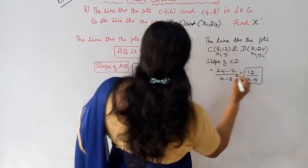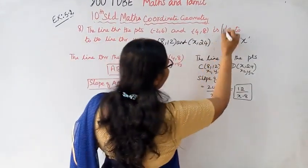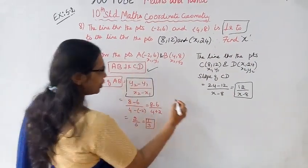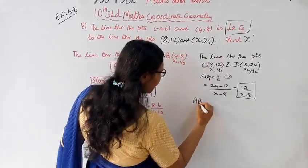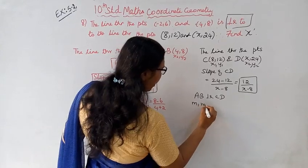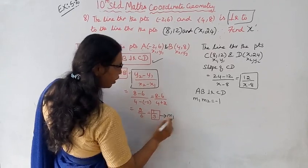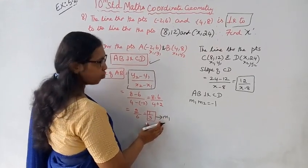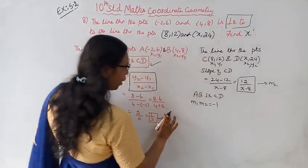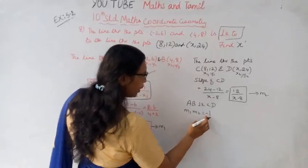AB is perpendicular to CD. The condition for perpendicularity is M1 times M2 equal to minus 1. Here M1 is the slope of AB and M2 is the slope of CD.